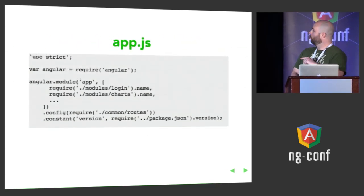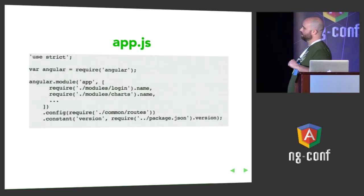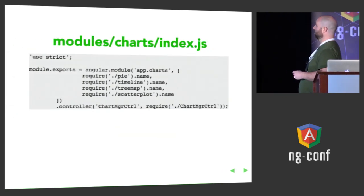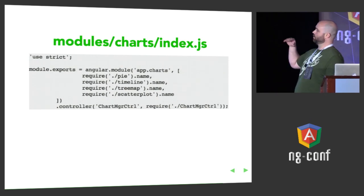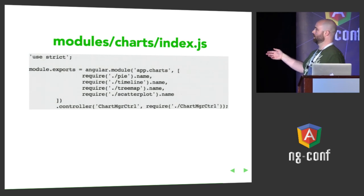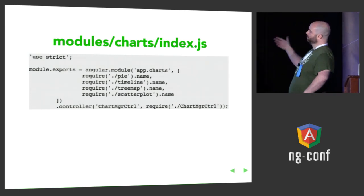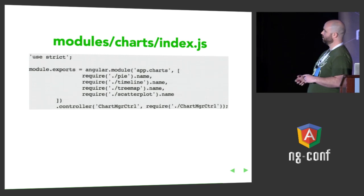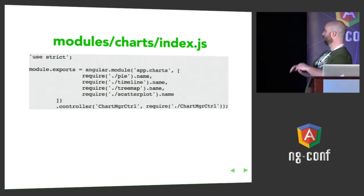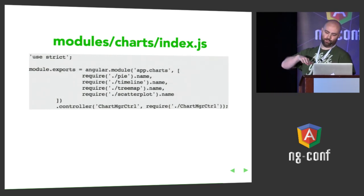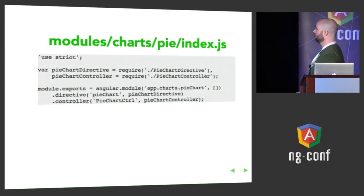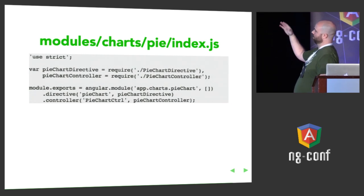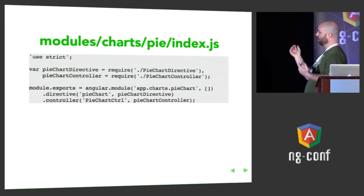The second require there — require dot slash modules slash charts — tells you it's a local file path, but charts is actually not a file, it's a directory. If you require a directory, it will look for index.js. So this is our app.charts module, and our app.charts module is made up of smaller pieces — our pie chart module, our timeline module, tree map, scatter plot — and then we have a controller defined to sort of manage everything. Going one layer deeper into the pie directory, again it's a directory with an index.js file. We've got a directive and a controller, our module is now app.charts.piechart, and everything's pulled in like that.